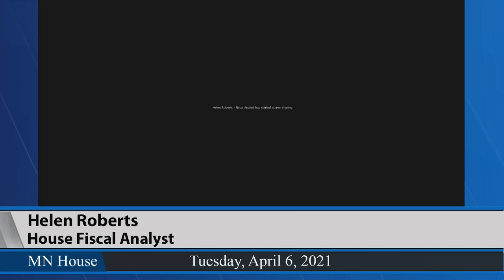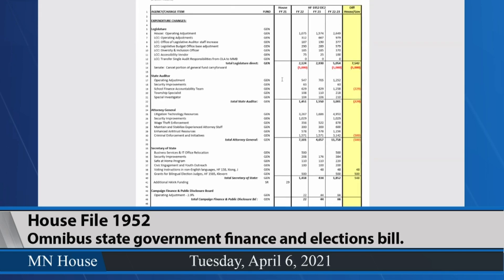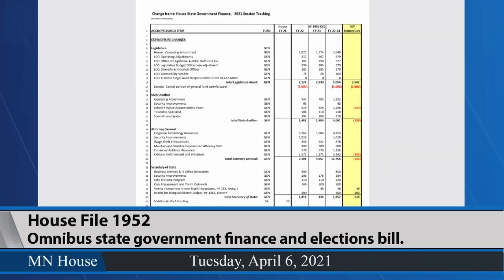Mr. Chair, Miss Roberts will probably go first because the first article of the amendment is the appropriations article. Members, can you hear me okay? I'm going to share my screen. I'll try to speak up. What I'm going to walk you through is a change item spreadsheet for the amendment. Typically we would walk through the more detailed spreadsheet, but given that we're doing this in a Zoom environment I thought this would probably work better.